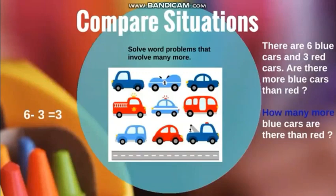One, two, three, four, five, six blue cars. Excellent! And let's count the red cars: one, two, three red cars. So, there are six blue cars and three red cars.